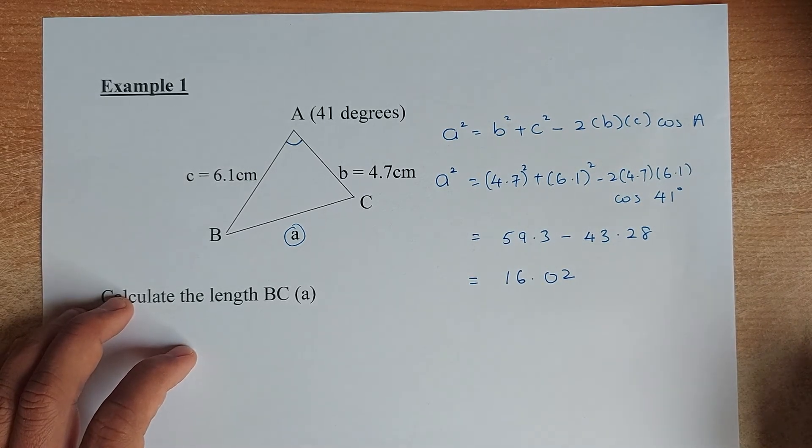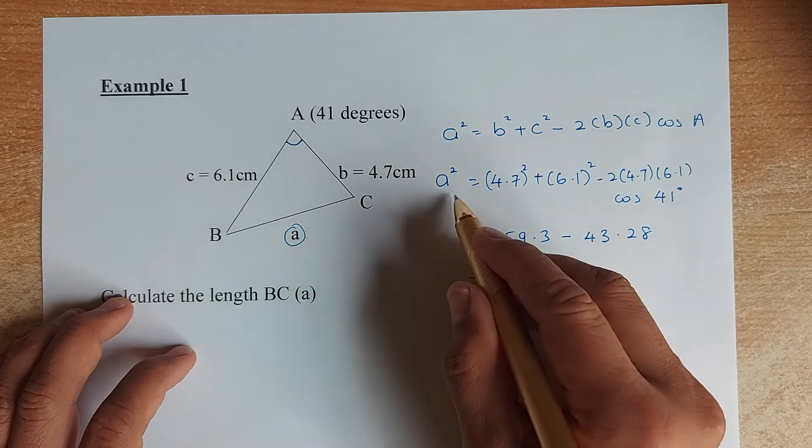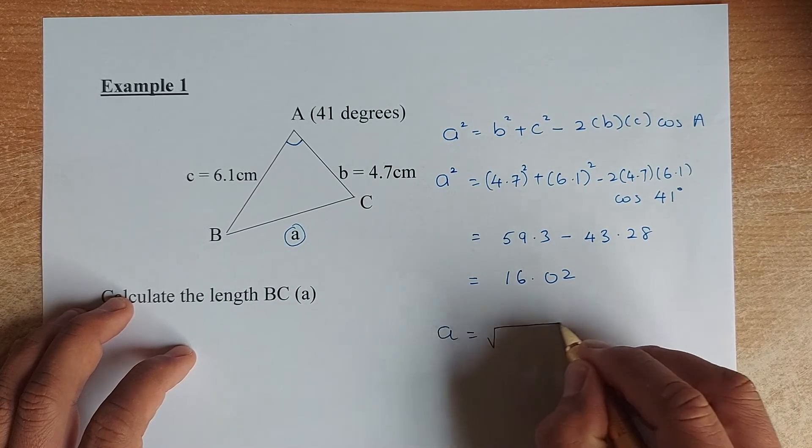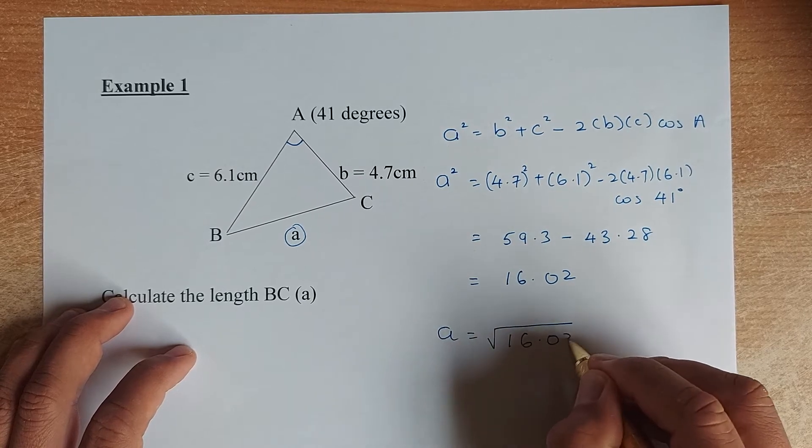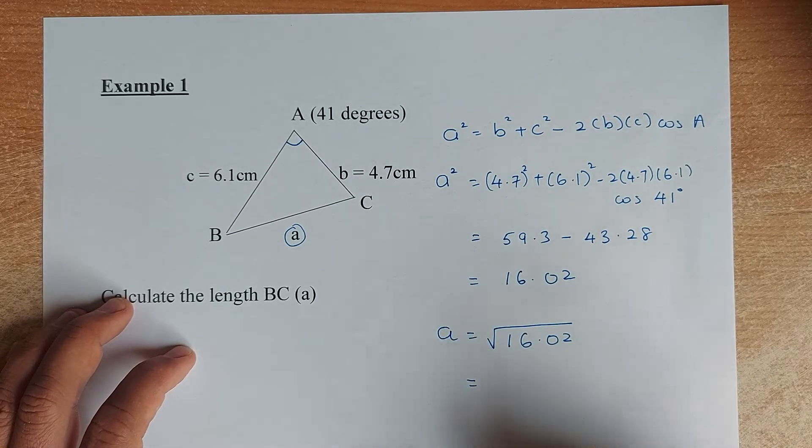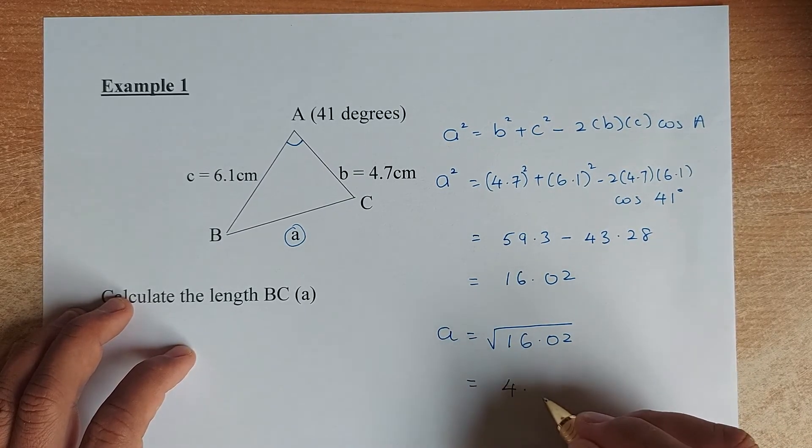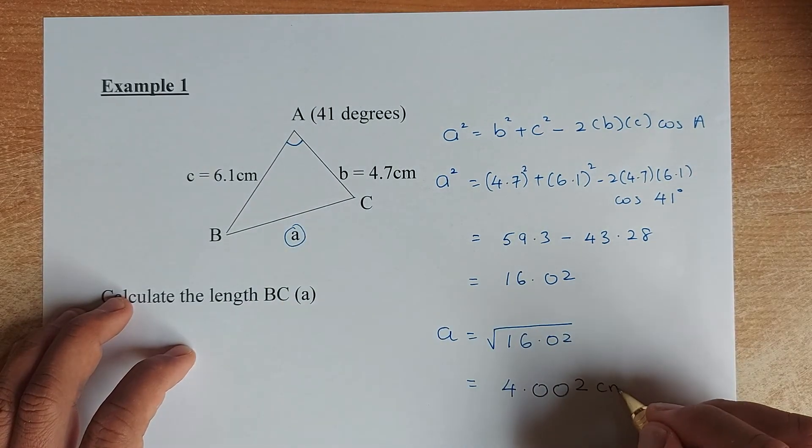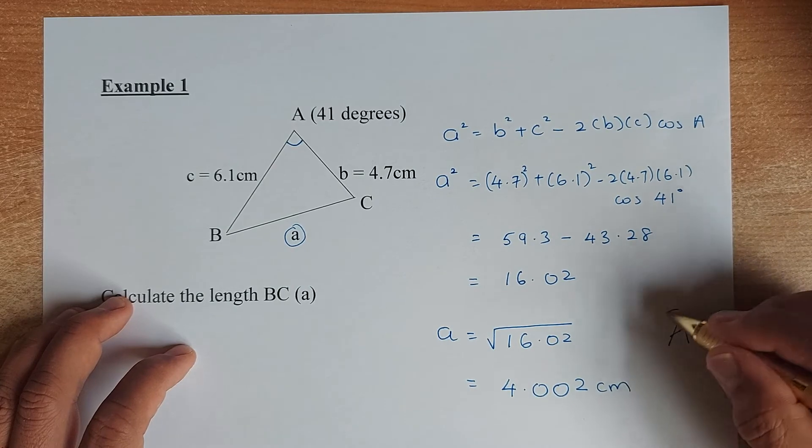Now put in your calculator 59.3 minus 43.28 and we get 16.02. Again, as I told you before, we are interested in a, the length a, rather than a squared. So to get your a, you need to square root the answer, 16.02. And the answer comes to 4.002 centimeters and that will give you an achieve.